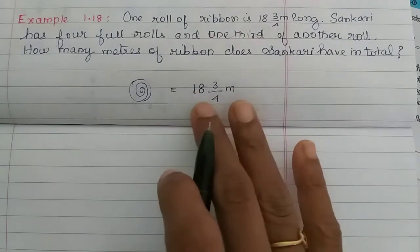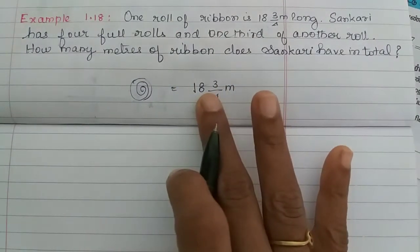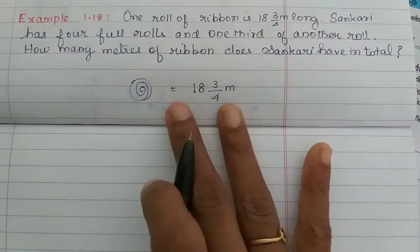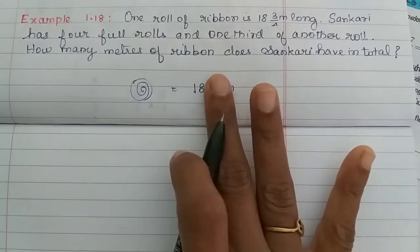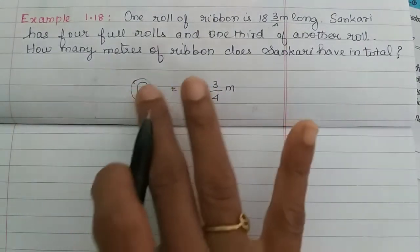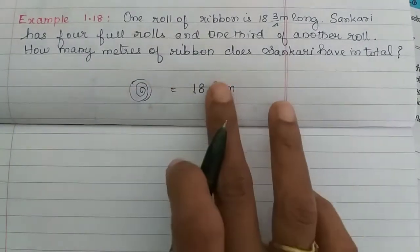It's 19 meters. If you put this in a fraction or mixed number, we will take it. But if you look at the whole number, you will look at it. One roll of ribbon is 18 3 by 4 meter.